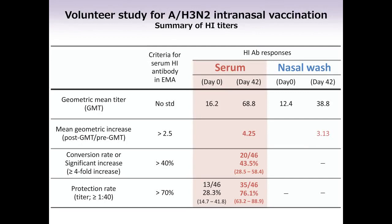This is a summary of the antibody responses. In the serum, the mean geometric increase, the seroconversion rate, and the seroprotection rate meet the criteria for serum HI antibody listed by the European Medicines Agency, as shown in the table. In addition to the serum antibodies, we can also observe nasal wash HI antibodies, as you see here.